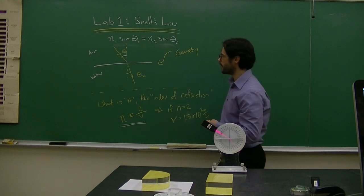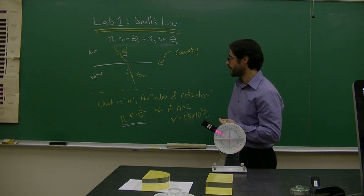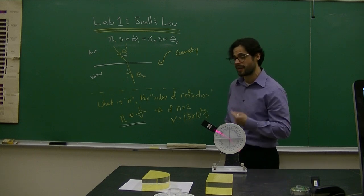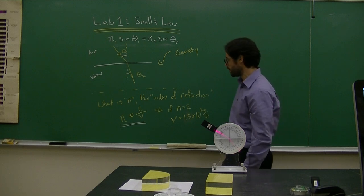And it'll bend according to that. So in fact, as you witness light rays bending and you do this experiment, what you're doing is you're actually indirectly measuring the speed of light in that material, which otherwise would be very, very difficult.